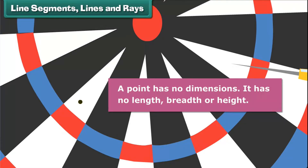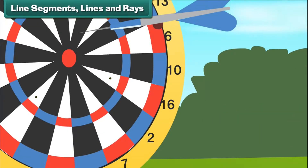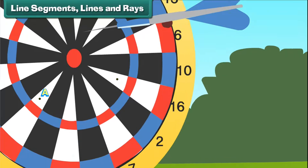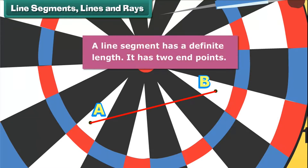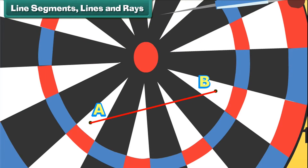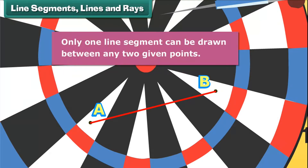It has no length, breadth or height. Let us remove another dart to reveal another point. We name the two points A and B. We now join the two points. We get the line segment AB. A line segment has a definite length. It has two end points. Only one line segment can be drawn between any two given points.